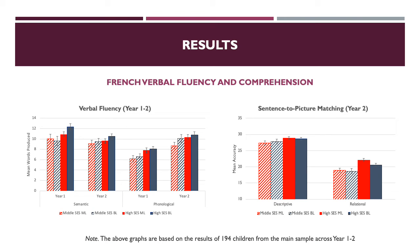The graph to the left shows verbal fluency scores for the easier semantic categories and more difficult phonological categories, while the graph to the right depicts sentence to picture matching scores for the easier descriptive sentences and more difficult relational sentences. In two-way repeated measures analyses of variance, there were no significant effects of language group differences for either task. However, the results demonstrate that high SES students outperformed middle SES students on both tasks. These effects remained even when the data were analyzed with two-way repeated measures ANCOVAs, which controlled for EVIP scores.